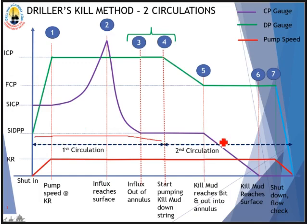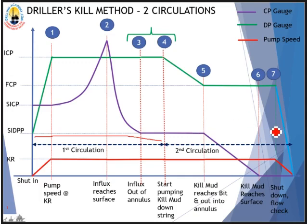The first circulation is to circulate the influx out of the annulus by using the original mud in the well. You can start circulating right away while doing your calculations and mixing the kill mud — this will minimize the chance of gas percolation. The second circulation, starting from stage number four, is to displace the entire well with kill mud and regain overbalance against formation pressure. This method does not require much initial calculation, however it takes more time and casing pressure will be higher than with the Wait and Weight Method.